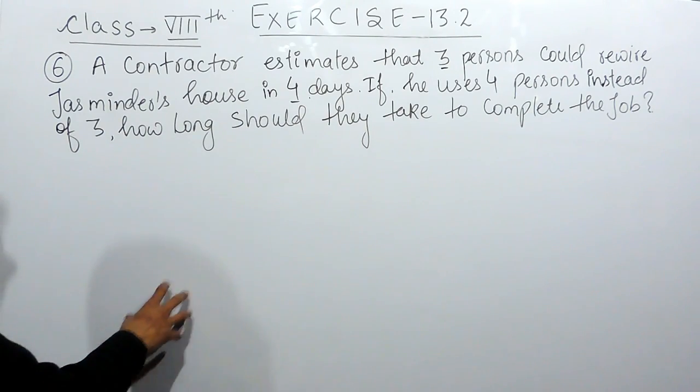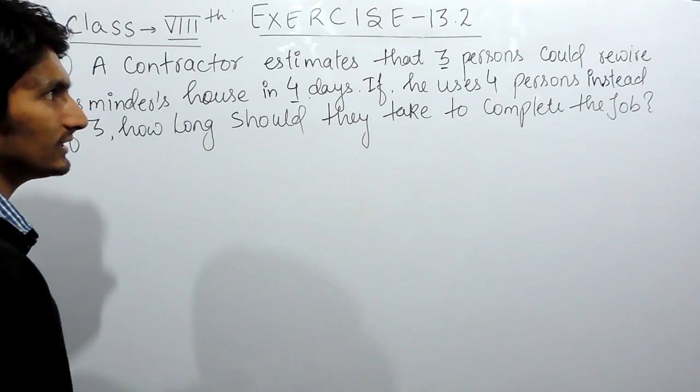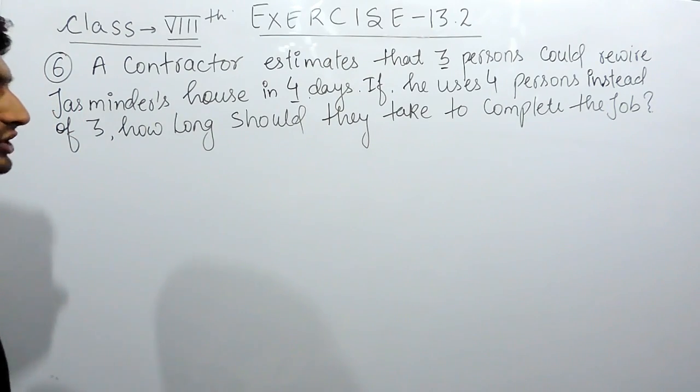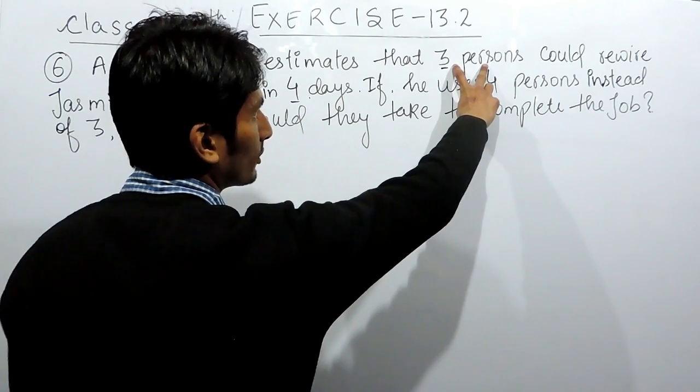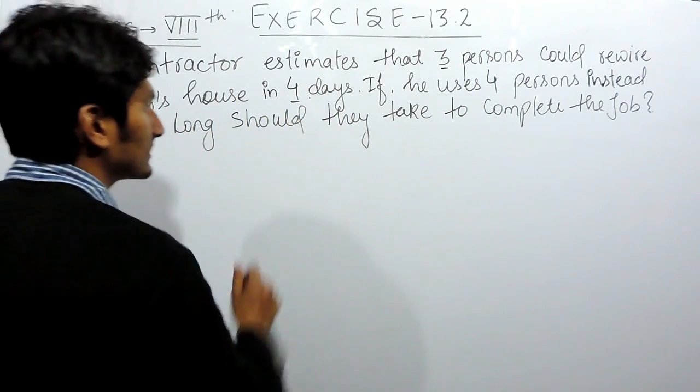To solve these kind of questions, first of all we have to find the number of parameters, means the number of things this question is talking about. There are two things: the first is the number of persons and the second is the number of days.